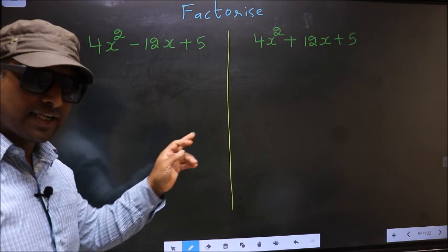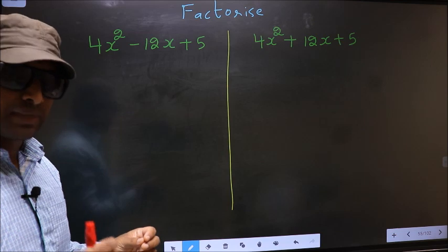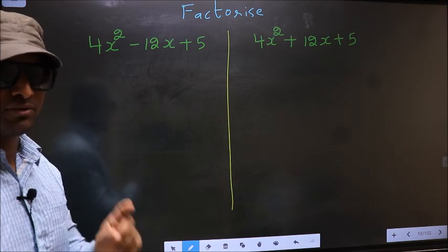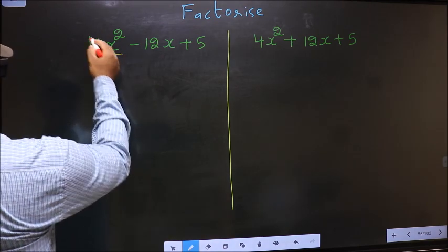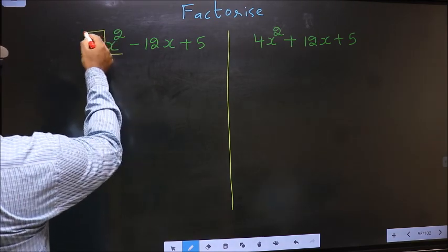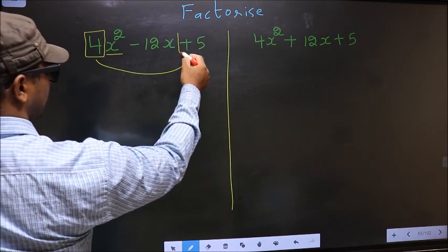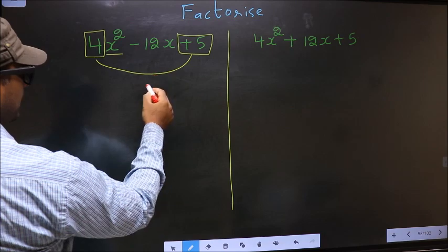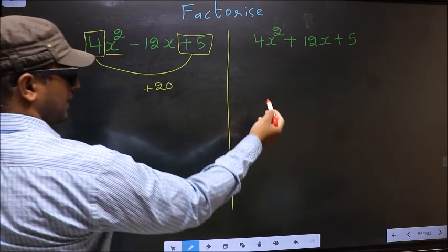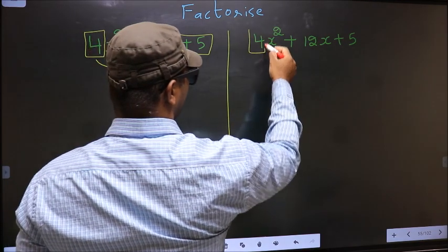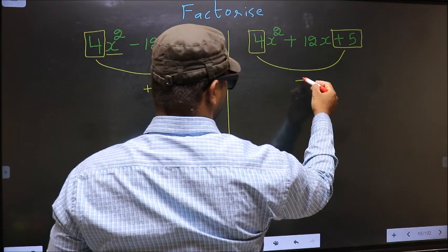While factorizing these, I will let you know where the difference comes. But before that, we should do the first step. The coefficient of x squared — that is 4 — should be multiplied by the constant, that is plus 5. So, 4 into plus 5 is plus 20. Even for the second expression, coefficient of x squared 4, multiplied with plus 5, you get plus 20.